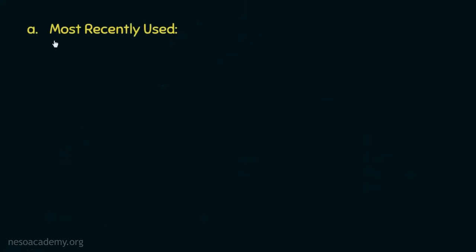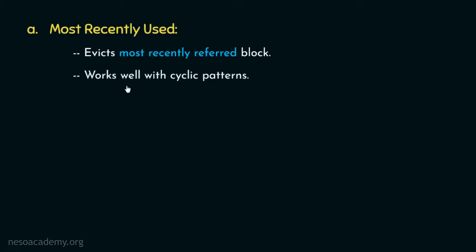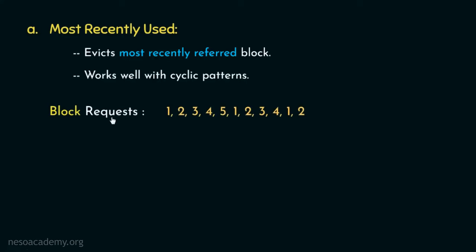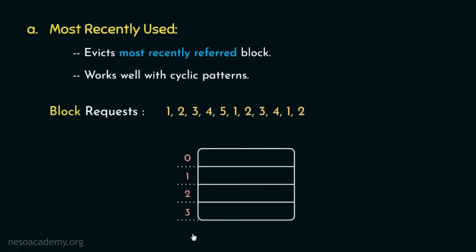Coming to the most recently used or MRU, this cache replacement policy evicts the most recently referred block and it works well with block requests of cyclic pattern. Let's understand this with the help of an illustration. Consider this block request and a fully associative cache with four lines.